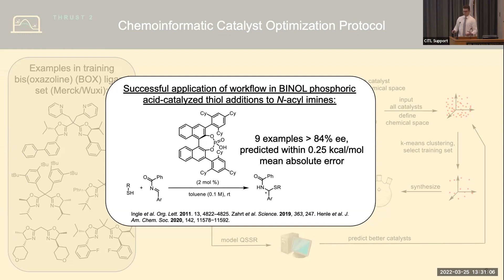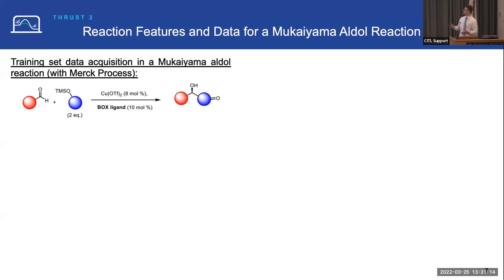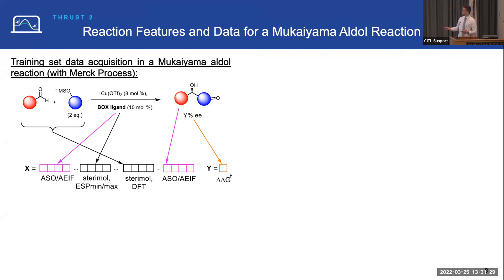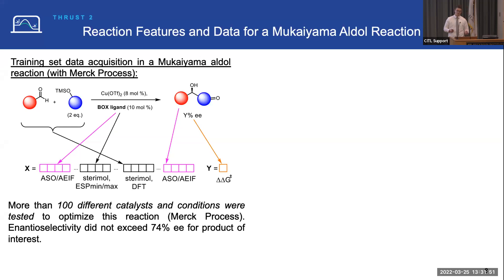We have a tool we think is effective for catalyst optimization, and now we want to solve a real-world problem. This is in collaboration with Merck Process. They approached us with a Mukaiyama aldol reaction where we're making stereogenic alcohol products. We featurized this by a variety of methods, including our grid-based average steric occupancy and average electronic indicator field descriptors, as well as lower-level descriptors like Sterimol and some higher-level descriptors calculated ab initio.